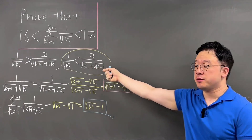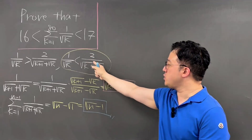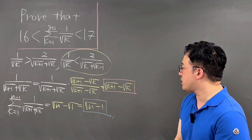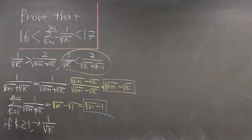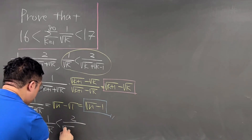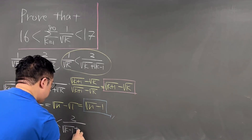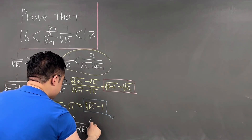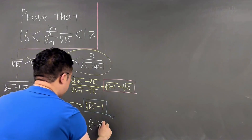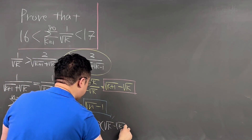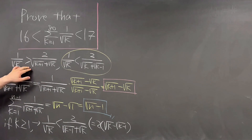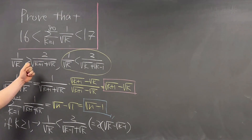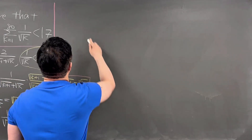So for the upper bound part: 1 over square root of k is less than 2 over (square root of k plus square root of (k−1)), for k greater than or equal to 1. That means 1 over square root of k is less than 2 over (square root of (k−1) plus square root of k), which equals 2 times (square root of k minus square root of (k−1)). Now let's talk about the lower bound first: 1 over square root of k is greater than 2 over (square root of (k+1) plus square root of k).